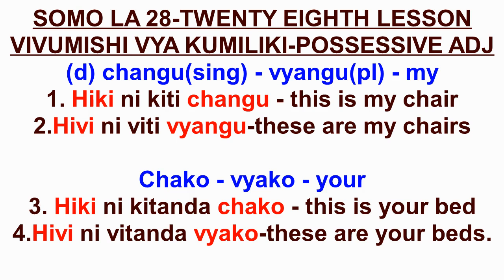Dear lovers of the Swahili language, we proceed with the last part of the possessive adjectives. This is lesson 28 — somola ishirini na nane. The topic is vivumishi vya kumeliki, possessive adjectives. There are four types of possessive adjectives and today we are going to see the last one, number four. We have already seen the first, second, and third.